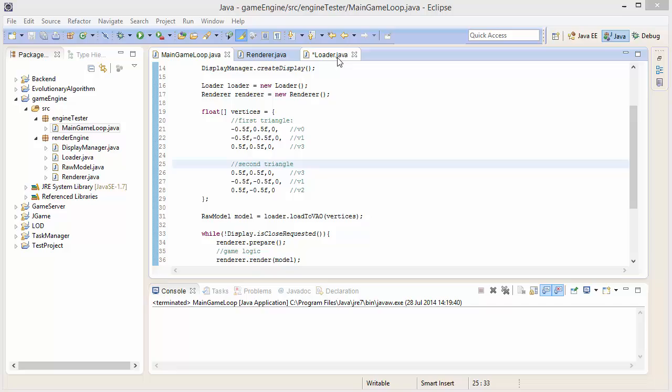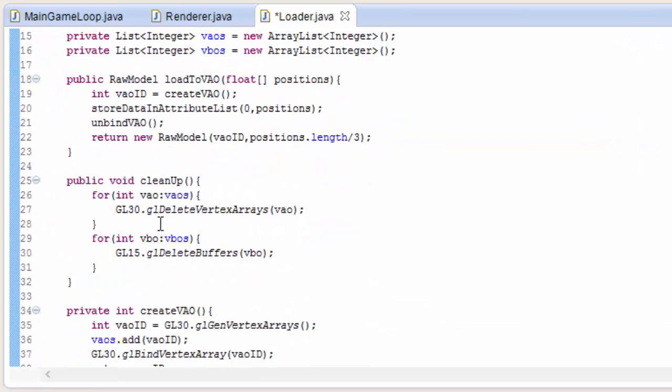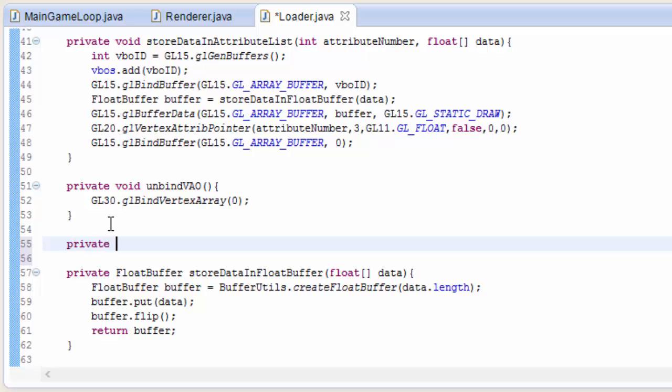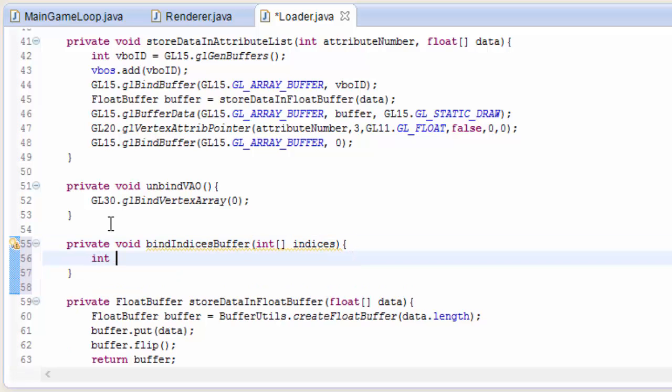So let's now go ahead and implement all of that into the code. So we'll start off in the loader class. And we're going to add a method here that's going to load up that indices buffer that I've been talking about, and bind it to a VAO that we want to render.